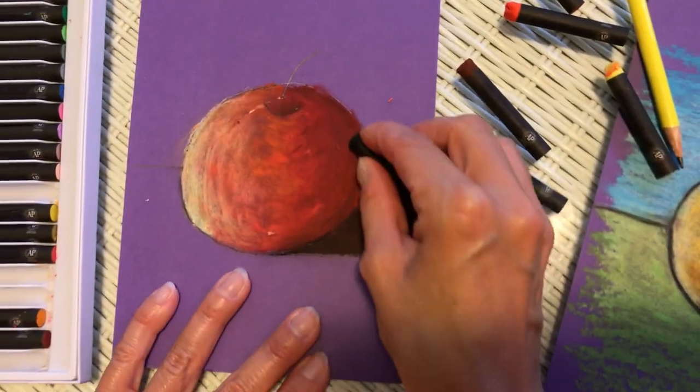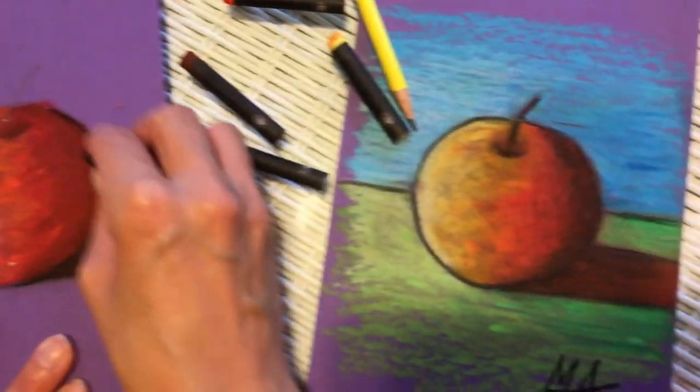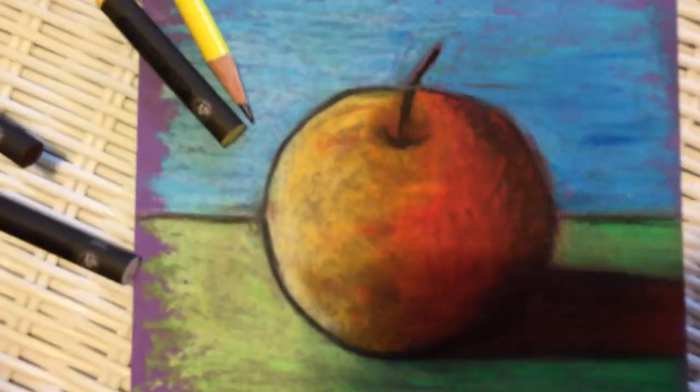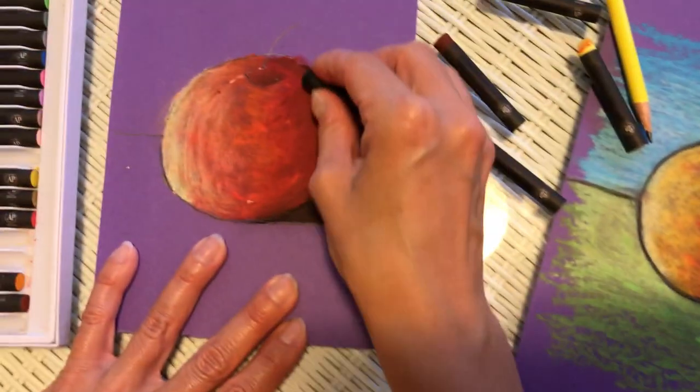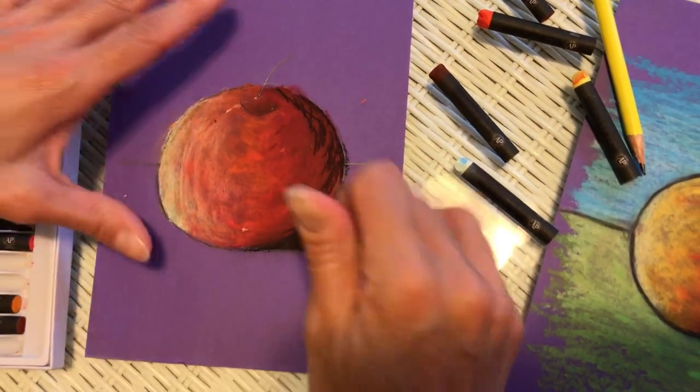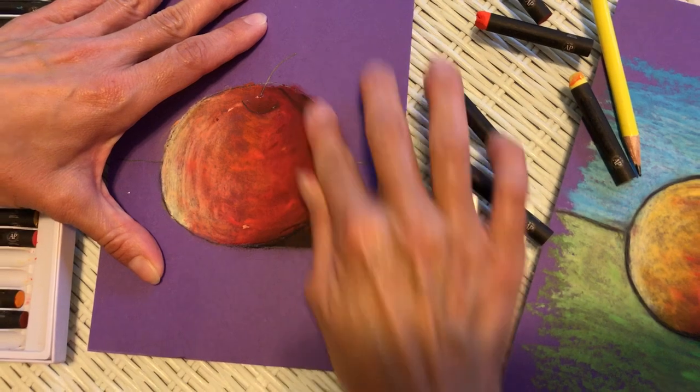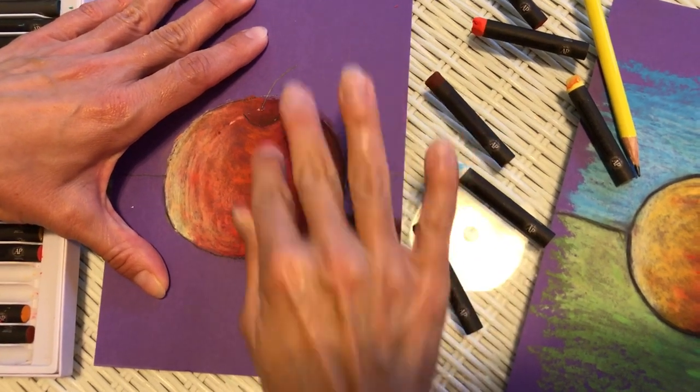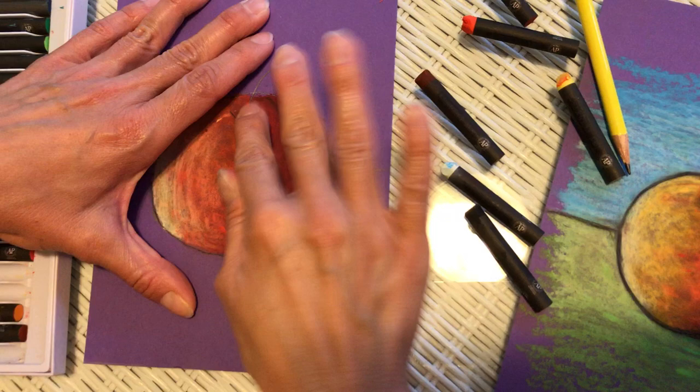I can even use a little bit of black on the actual object lightly. A little bit of hatching over here. And blending once again.